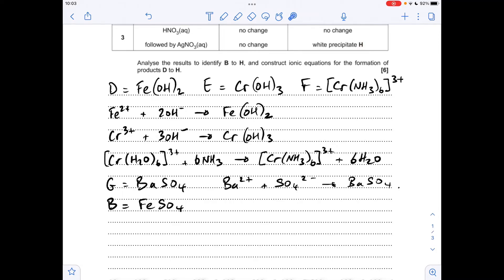So H is going to be silver chloride. There's the equation that shows the formation of that. Putting the evidence together, we know that C contains Cr³⁺ and we now know it's got chloride ions in it, so therefore C must be chromium(III) chloride.